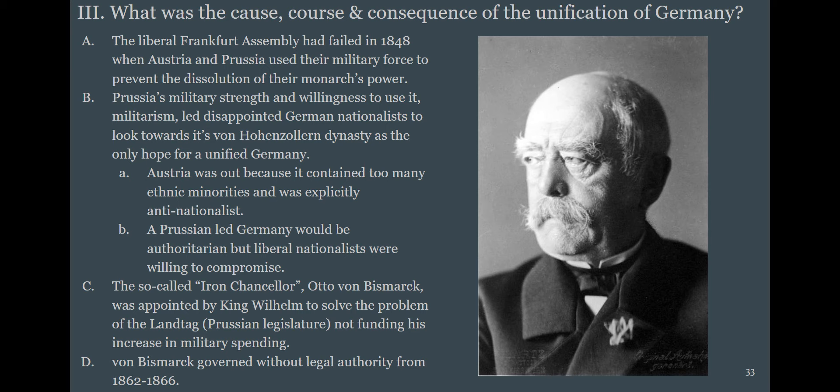Liberal in this context means human rights — we're not talking directly about the modern-day political context. Otto von Bismarck is, like Cavour in Italy, largely responsible for the unification of his country. He's appointed by King Wilhelm basically to solve an issue where the Prussian legislature doesn't want to pay for yet another expansion of the military.